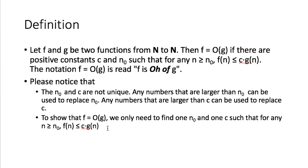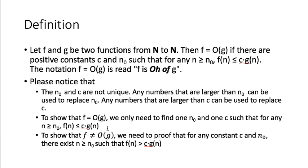Today I want to show you one example of how to prove that f is not O of g. To prove f is not O of g, we need to prove that you cannot find any n₀ and c such that for all n greater than n₀ you always have f(n) less than c times g(n).